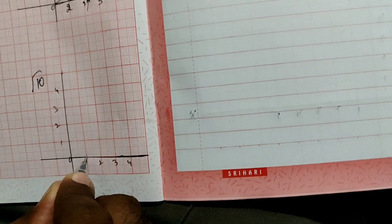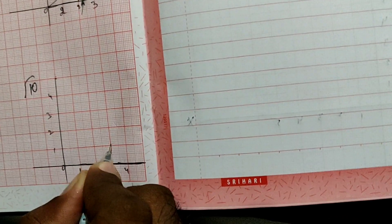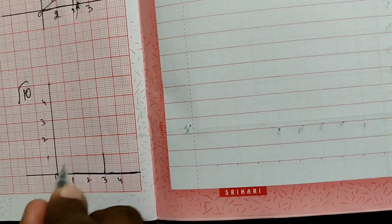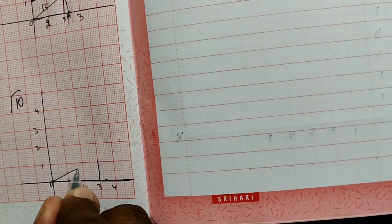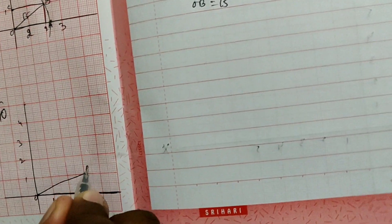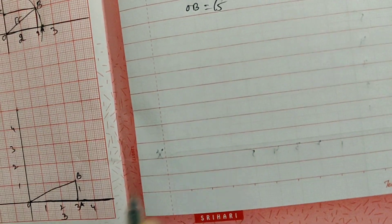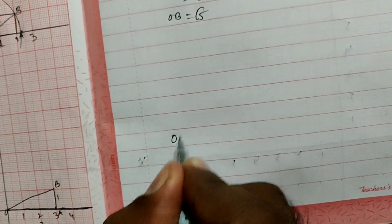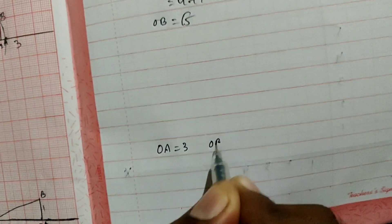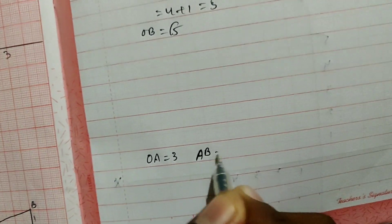Now for finding the value of root 10, take 3 units on the x-axis and 1 unit on the y-axis. Join the line to form a right-angled triangle, right-angled at A. OA is considered as 3 units and AB is considered as 1 unit.